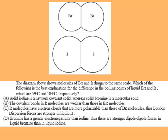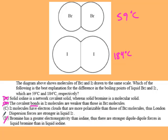For bromine and iodine with boiling points of 59 and 184°C respectively: neither is network covalent, we don't break bonds unless network covalent, and bromine's greater electronegativity isn't relevant since they both have only LDF. The correct answer is that iodine has more electrons, so it's more polarizable than bromine—resulting in greater London dispersion forces.